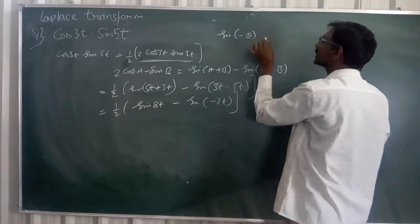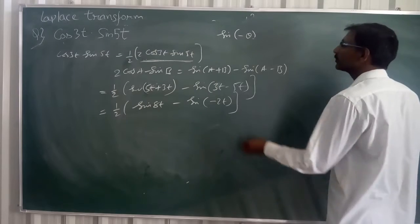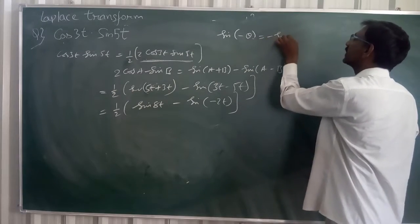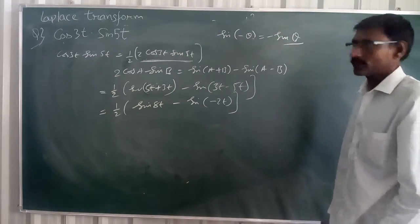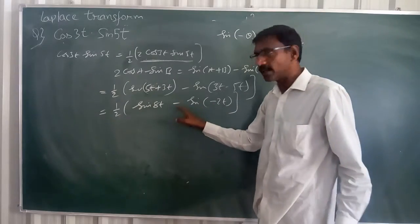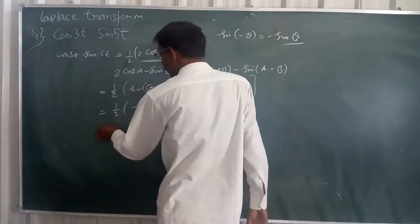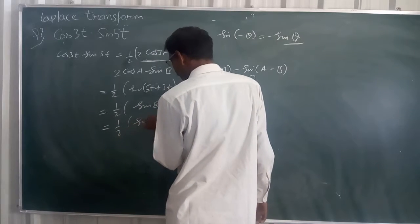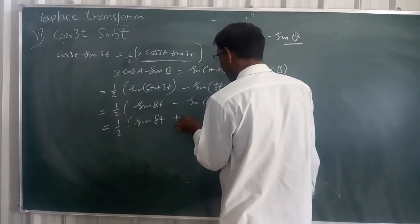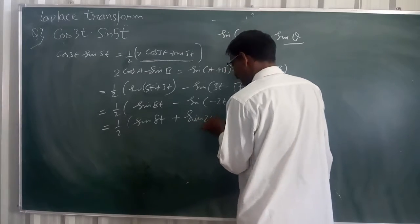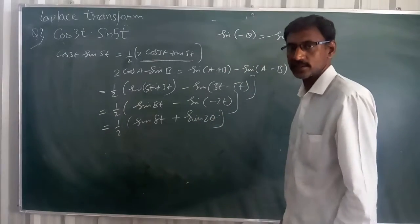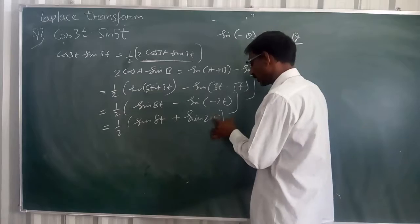Sine of minus theta is equal to minus sin theta. That's minus 1 by 2 into sin 2t. So I can write it as 1 by 2 into sin 8t plus sin 2t. Is it clear?